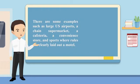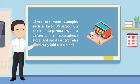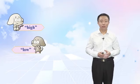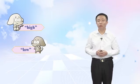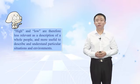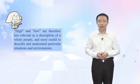Low context examples include large U.S. airports, a chain supermarket, a cafeteria, a convenience store, sports where rules are clearly laid out, and a motel. These terms are sometimes useful in describing some aspects of a culture, but one can never say a culture is purely high or low, because societies all contain both modes. High and low are therefore less relevant as a description of a whole people, and more useful to describe and understand particular situations and environments.